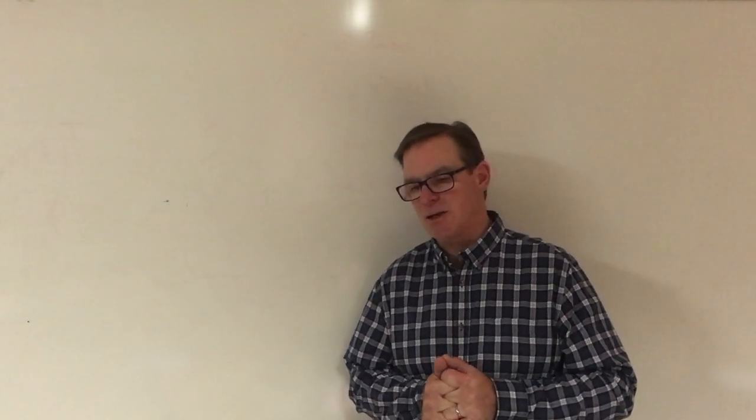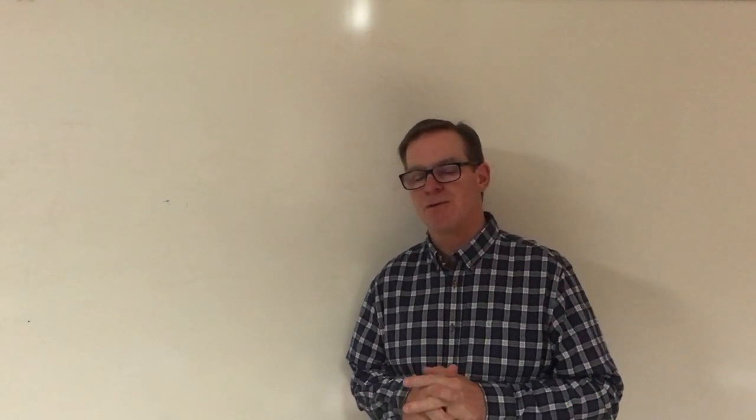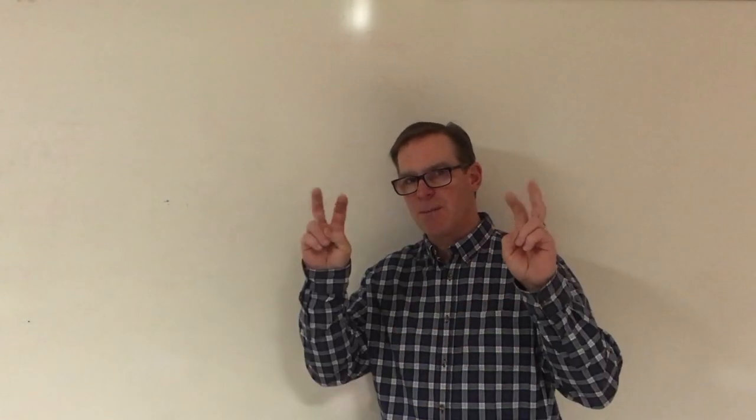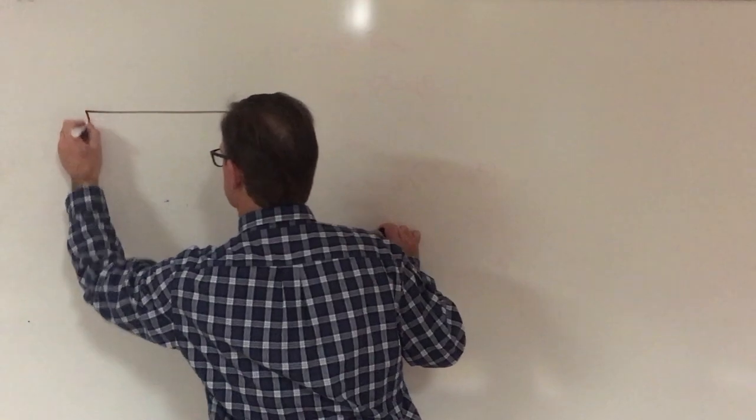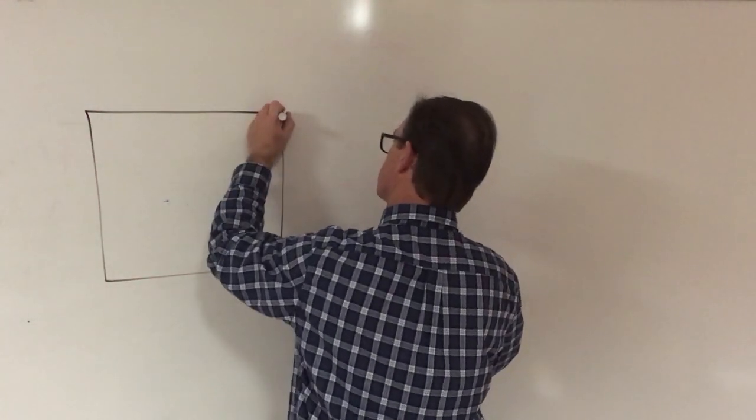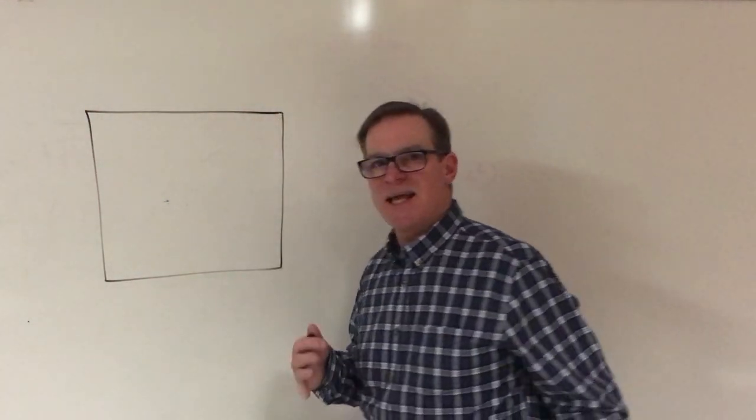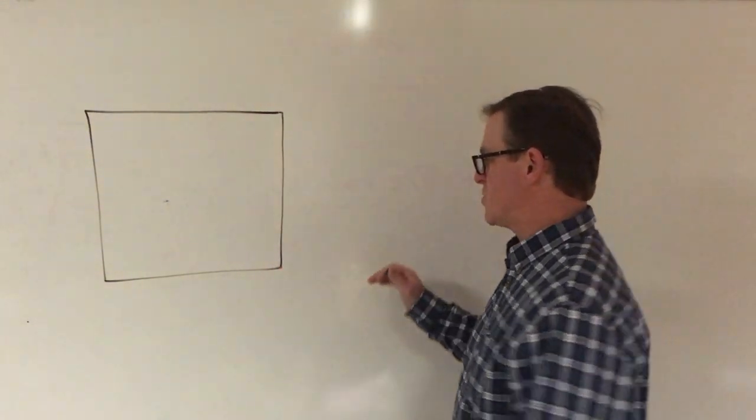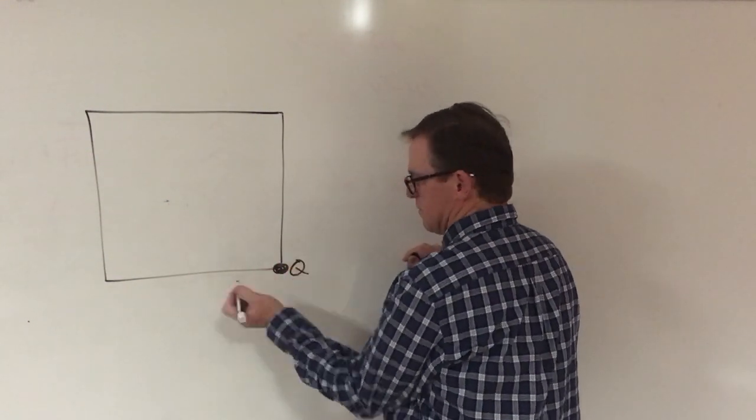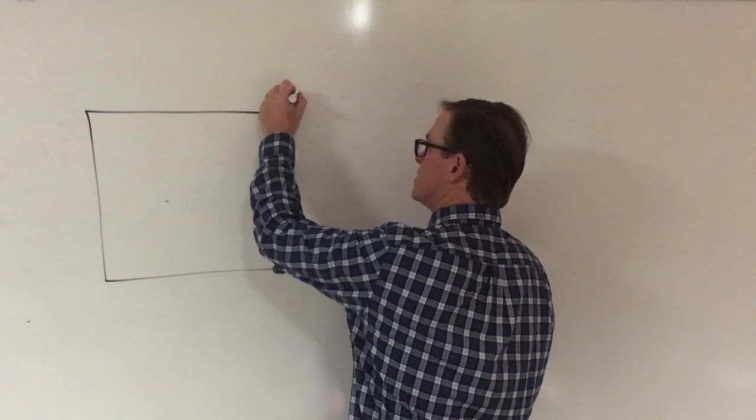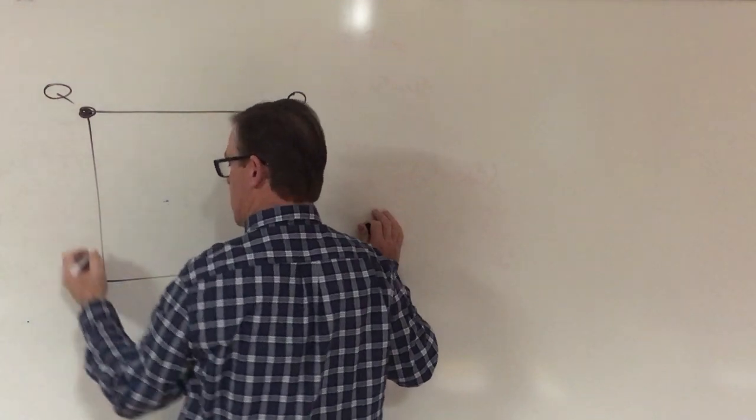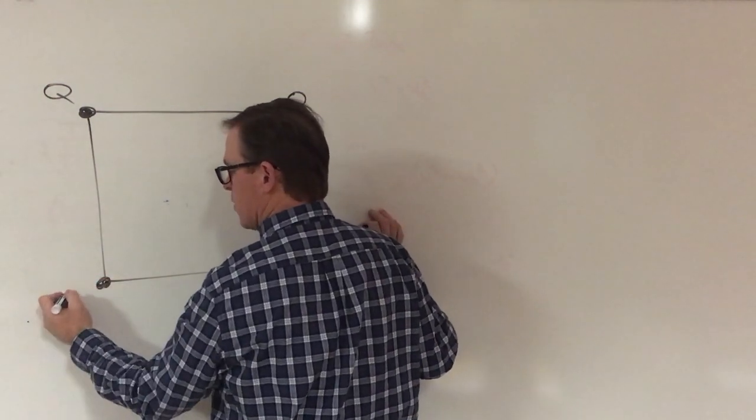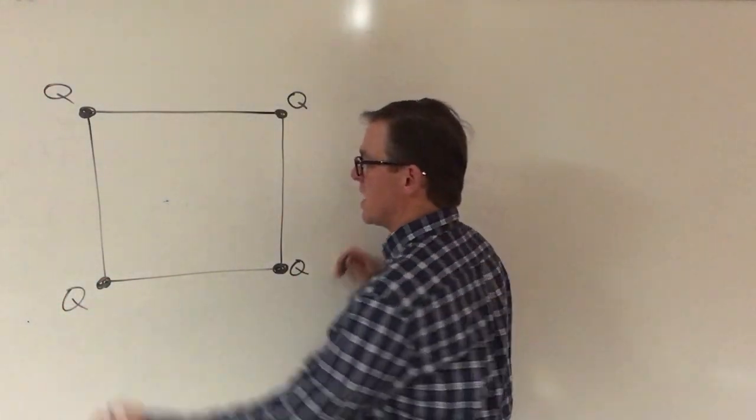Good morning. I'd like to look over and do for you problem number four from another book on homework 18-2. The problem states that there are four charges Q. I'm just gonna use capital Q for no other reason than it's easy. And they are at the corners of a square whose side length is L.